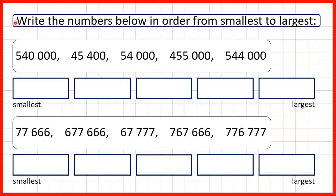We need to write the numbers below in order from smallest to largest. So first we have 540,000, 45,400, 54,000, 455,000, and 544,000.